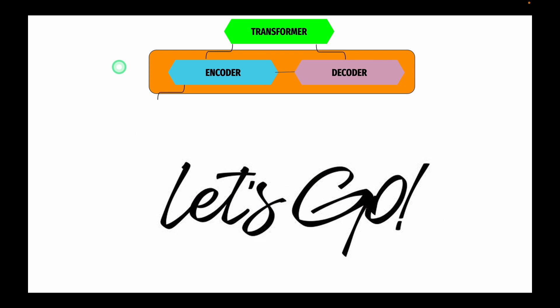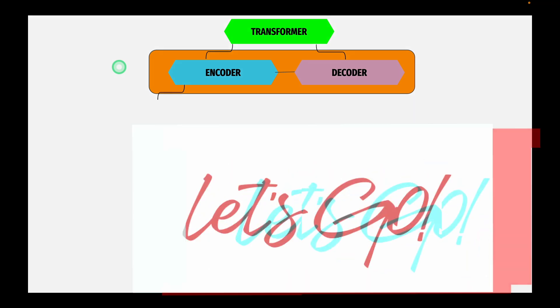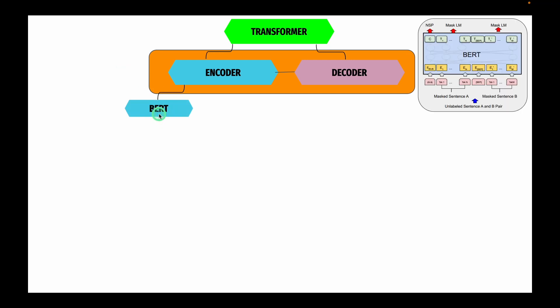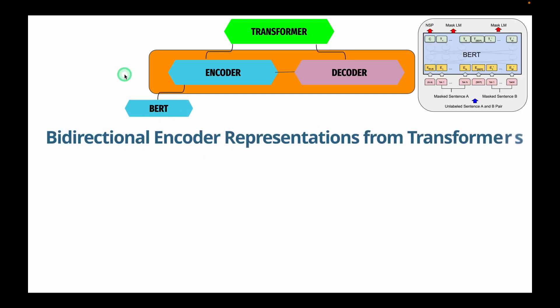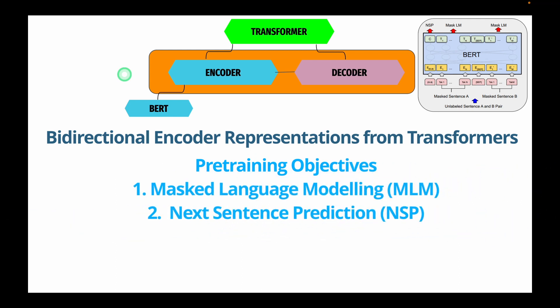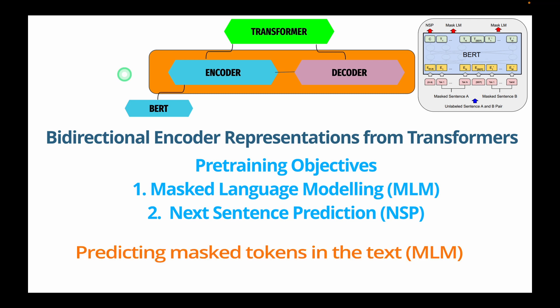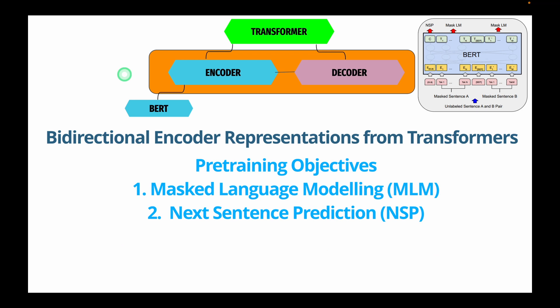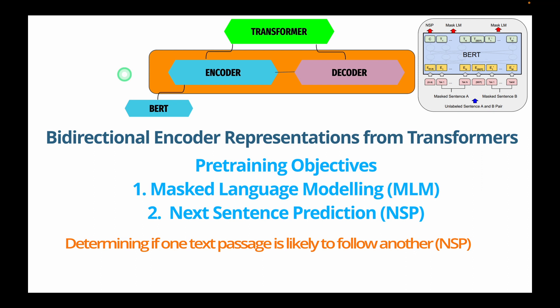Now let's look at different famous and important encoder-only models. The first model is BERT, which stands for Bidirectional Encoder Representations from Transformers. BERT is pre-trained using two training objectives: the first is predicting masked tokens in the text, also called Masked Language Modeling or MLM. The second pre-training objective is determining if one text passage is likely to follow another, also called NSP or Next Sentence Prediction.